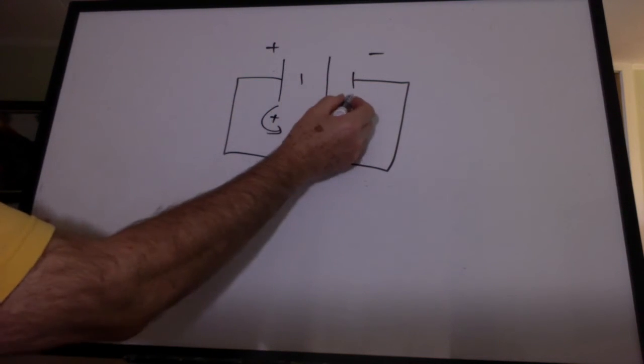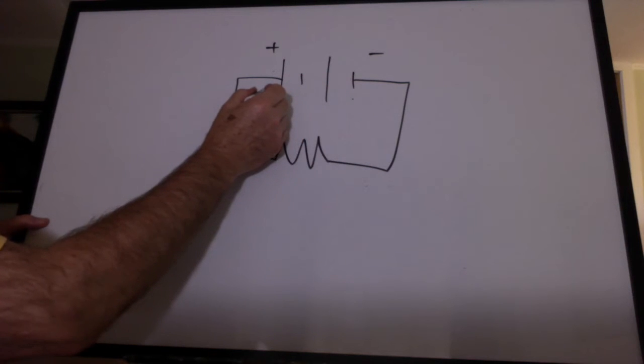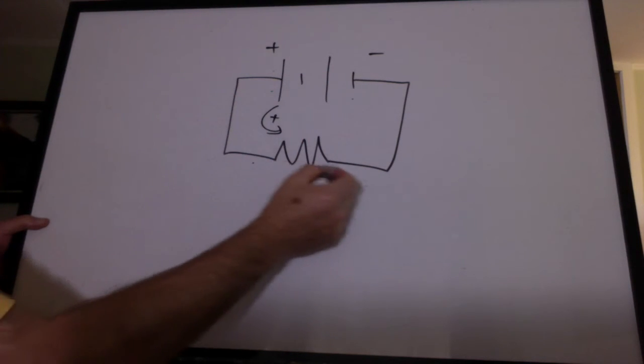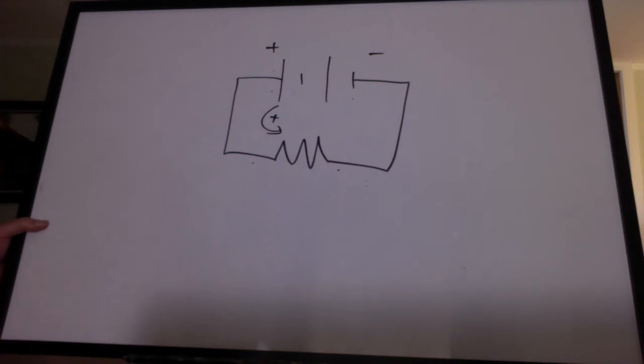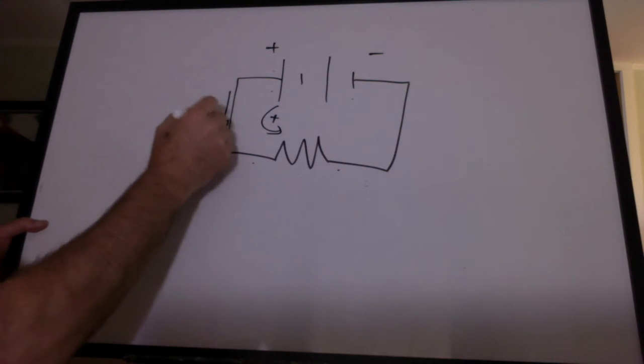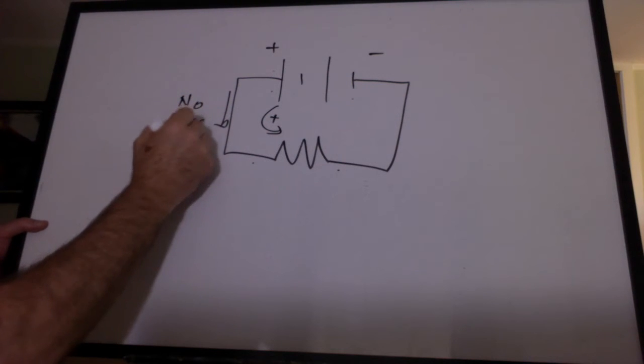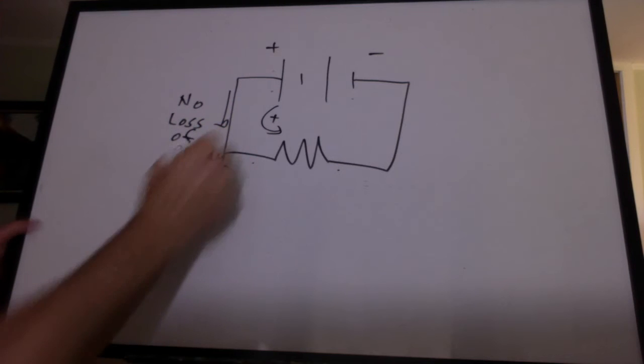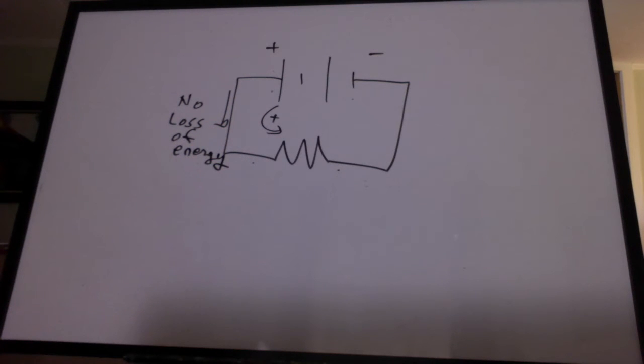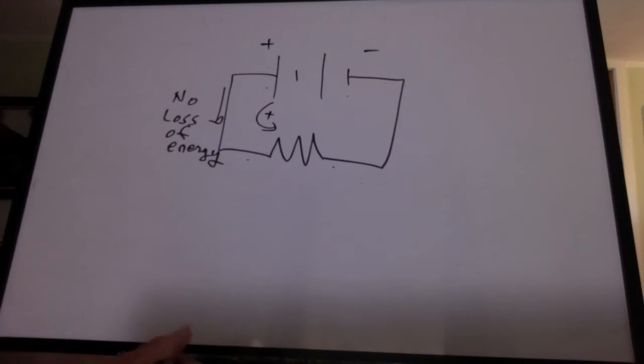Those positive charges are going to gain potential energy here. And then they're going to lose their potential energy across the resistor. Across the wire, there's no loss of energy. Well, that's ideally. We're assuming that there's no resistance in these wires.